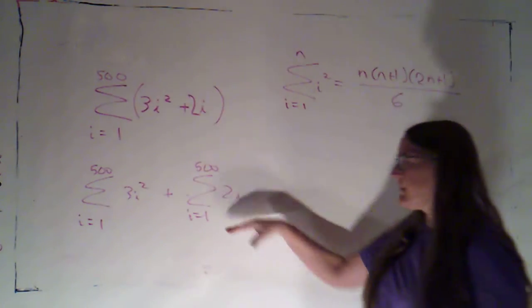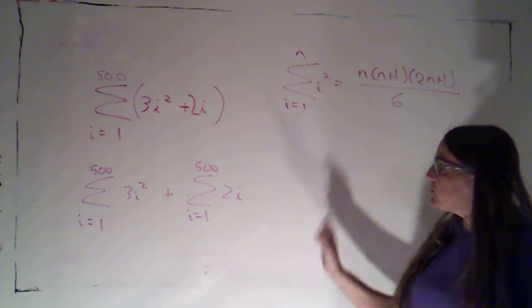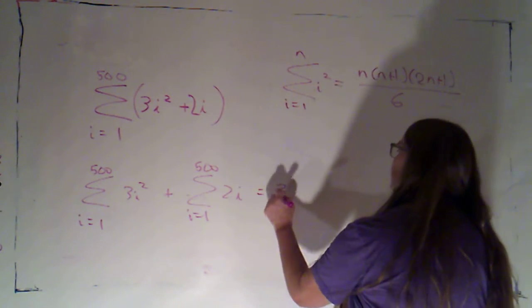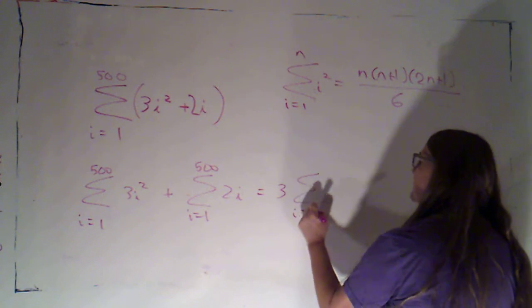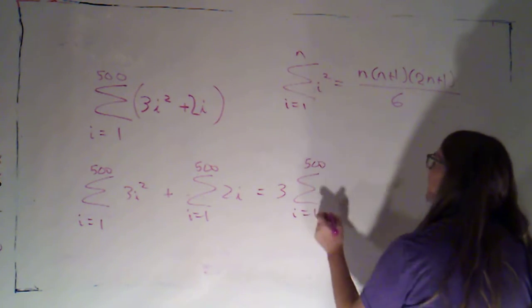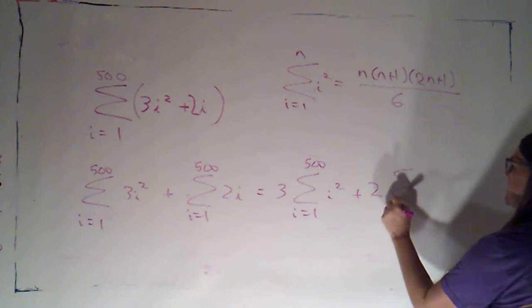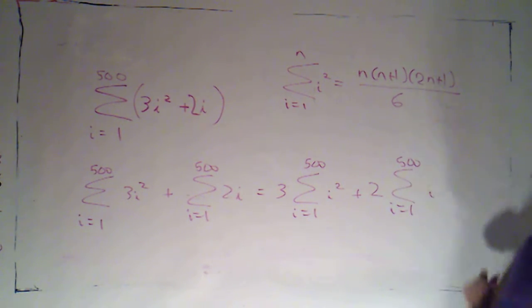So now I've got my i squared and my i separated. Each one has a constant multiple so I can factor out those constants. So I can say this is three times the sum as i goes from one to five hundred of i squared plus two times the sum as i goes from one to five hundred of i.